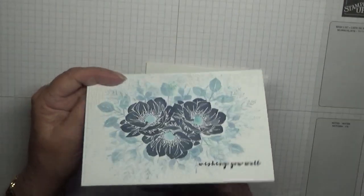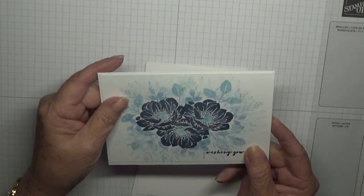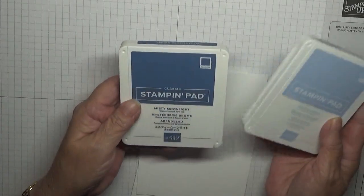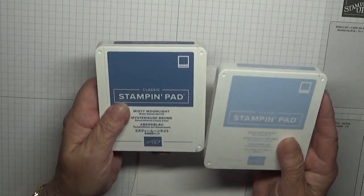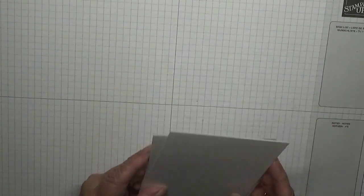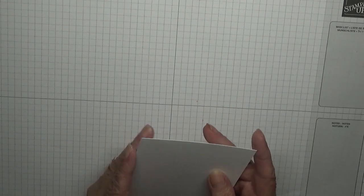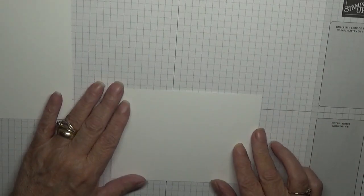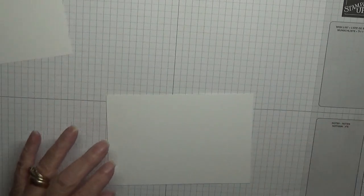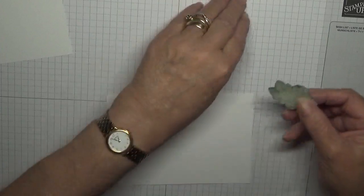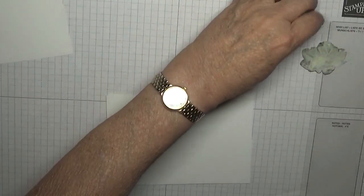The two inks I'm using are Seaside Spray and Misty Moonlight, and they're the only inks I'm using. I've got three masks, that's what I need, just three.